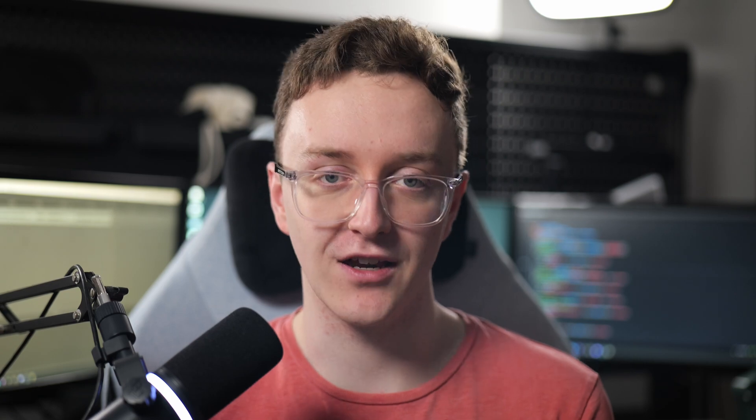Believe it or not, these things can actually be solved at compile time using a static type system, and I'm going to show you how using phantom types. So what exactly are phantom types? A phantom type is a type parameter that appears in the definition of a data type, but is not used anywhere in the data structure, meaning it has no effect on the runtime representation of that type.